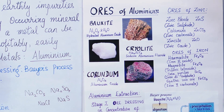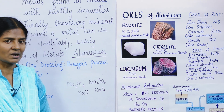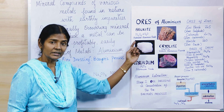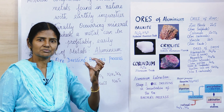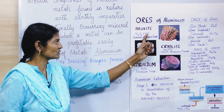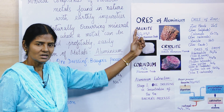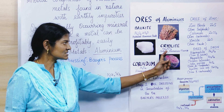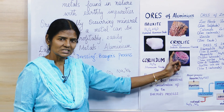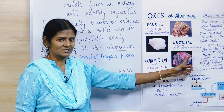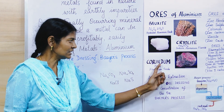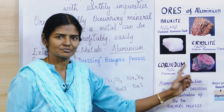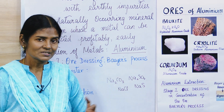When it comes to the ores of aluminium, the most abundant one is bauxite, which is hydrated aluminium oxide — Al₂O₃·2H₂O, meaning it contains two molecules of water with aluminium oxide. Then you have cryolite, which is Na₃AlF₆, sodium aluminium fluoride. Another ore is corundum, which is aluminium oxide (Al₂O₃) — the source from which you get rubies and sapphires.